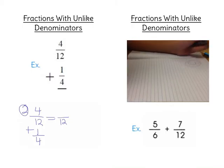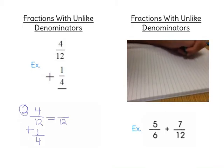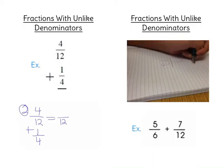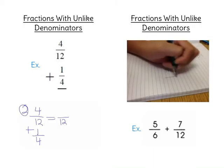The third problem is five-sixths plus seven-twelfths. First you need to find the least common multiple, which is twelve.